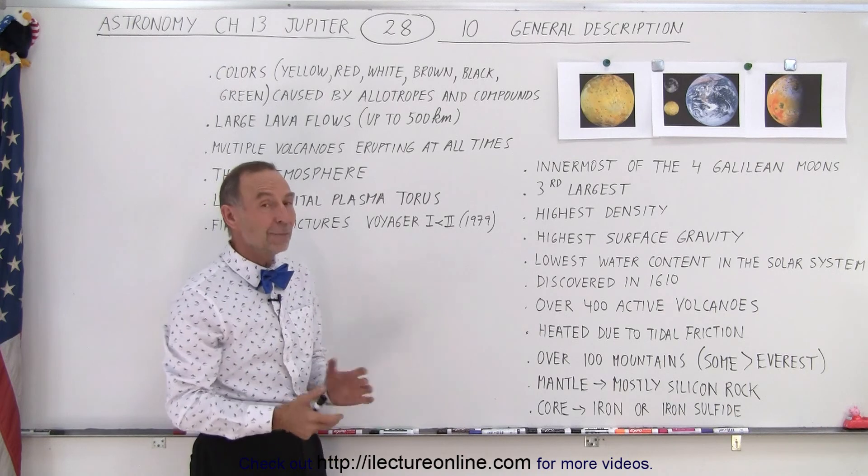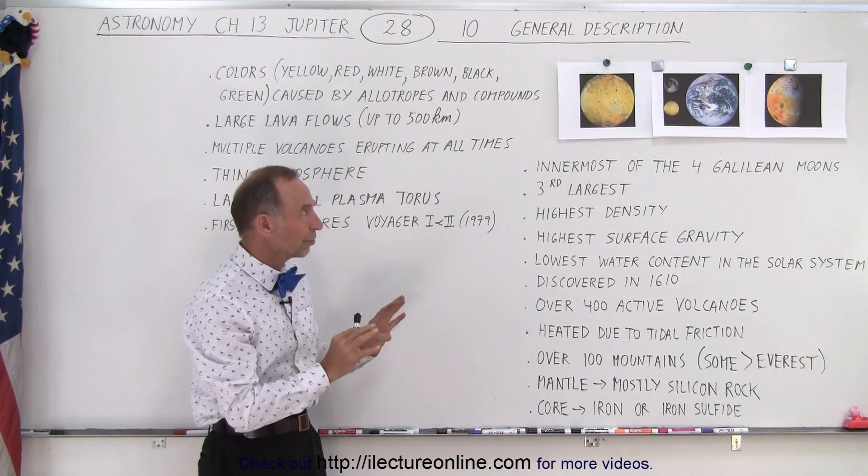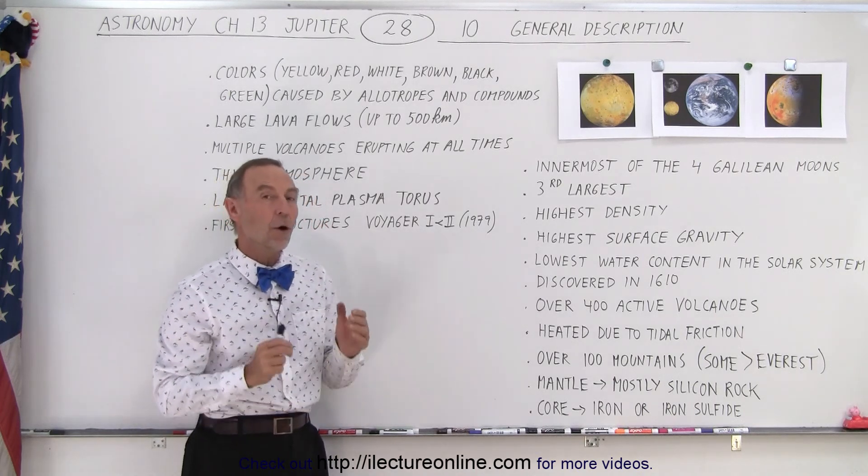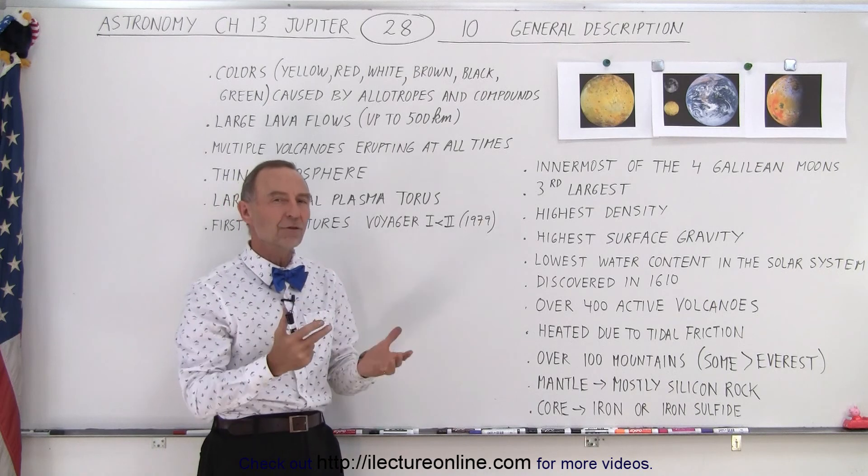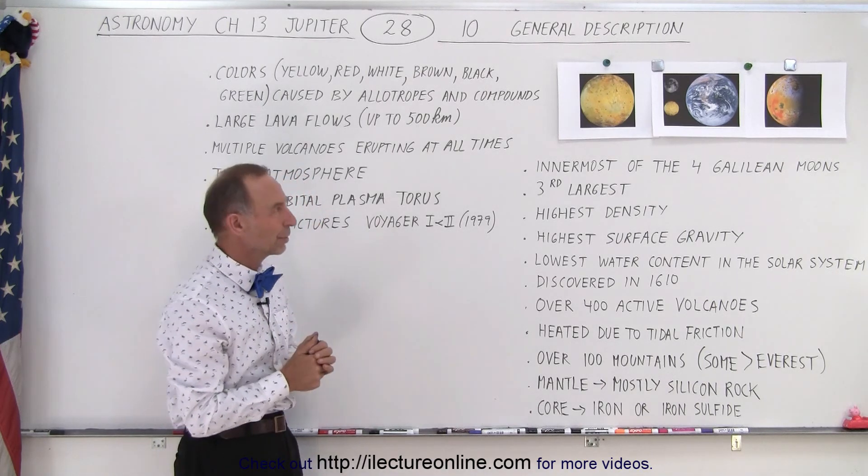But no, it is indeed a moon and that's exactly what it looks like in those beautiful colors of yellow and brown and red and black and white and some green in there. All come from the combinations of sulfuric compounds. And so we'll see that in a little bit more detail later.